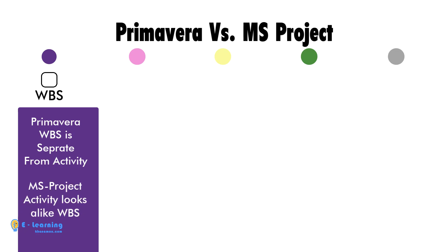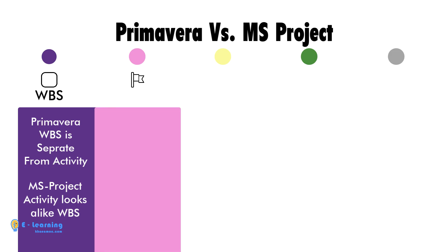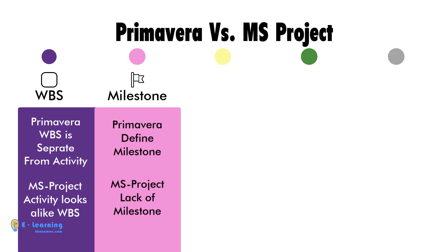In MS Project, activities are arranged to look like a WBS. In Primavera, you can define any kind of milestones, but in MS Project you cannot define start or finish milestones.